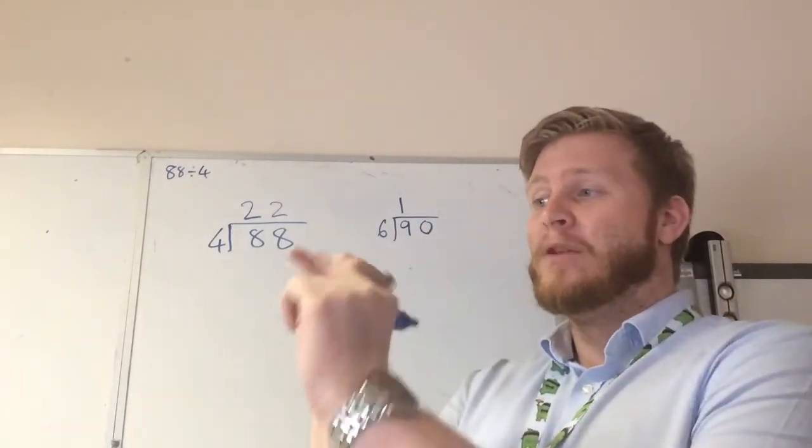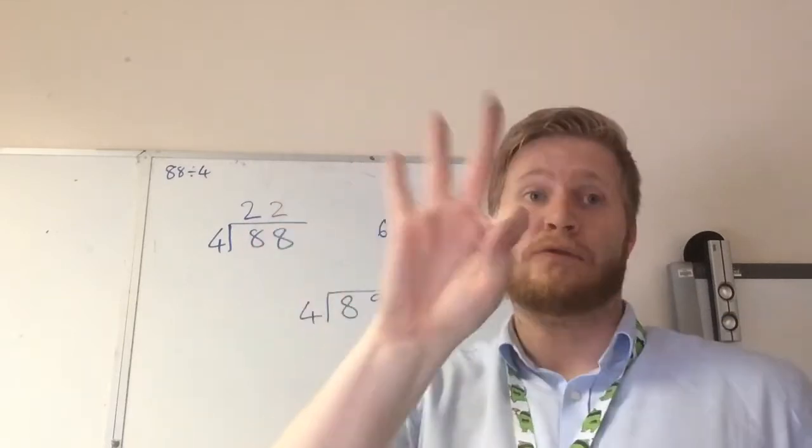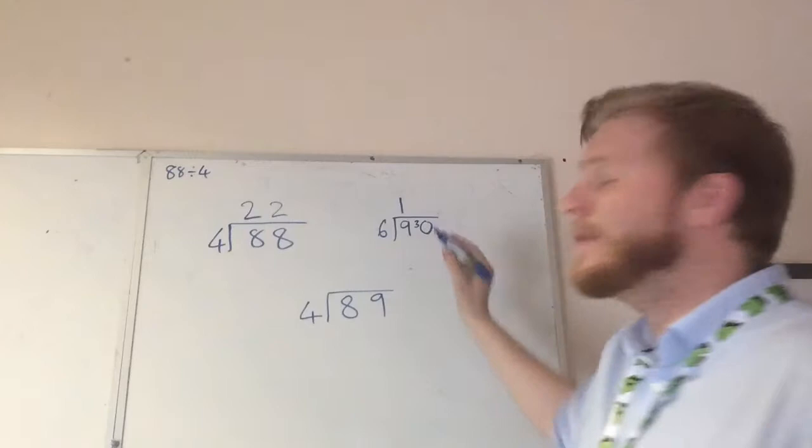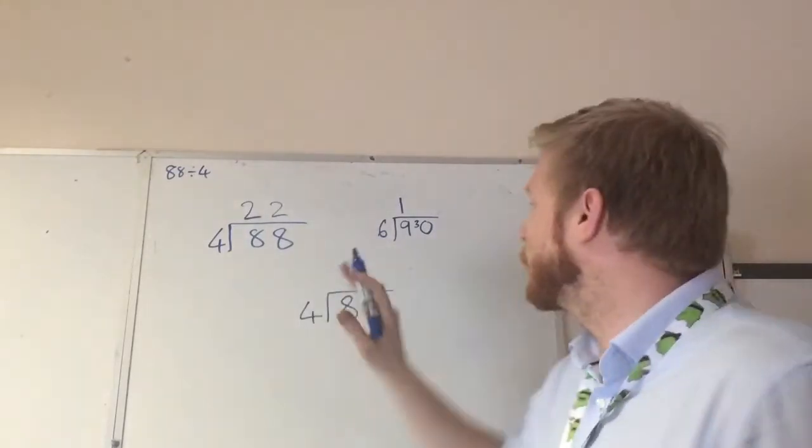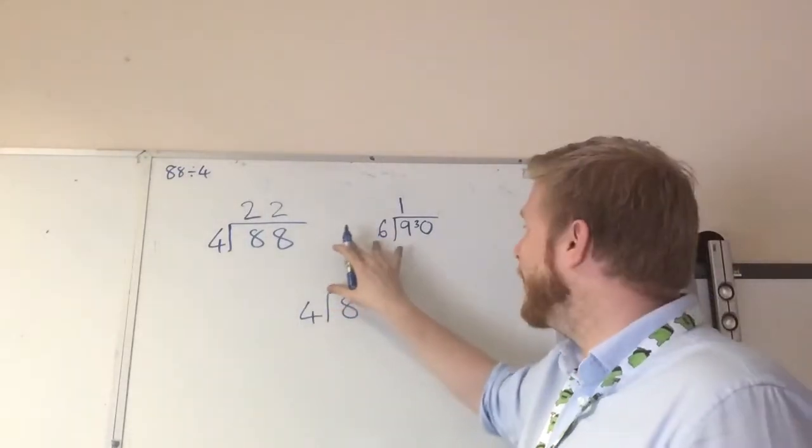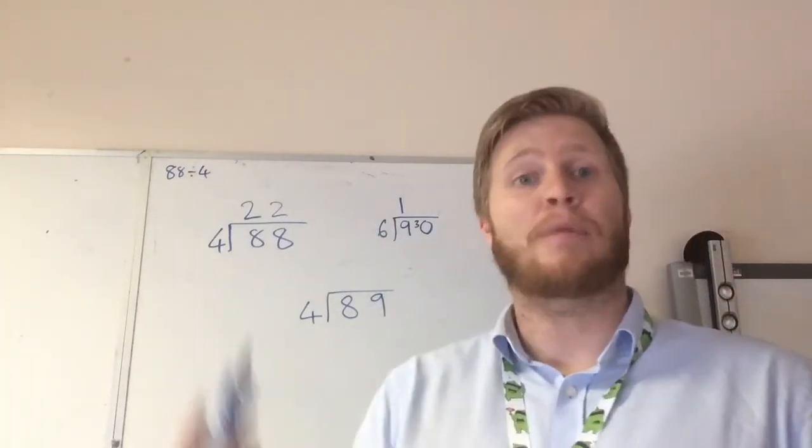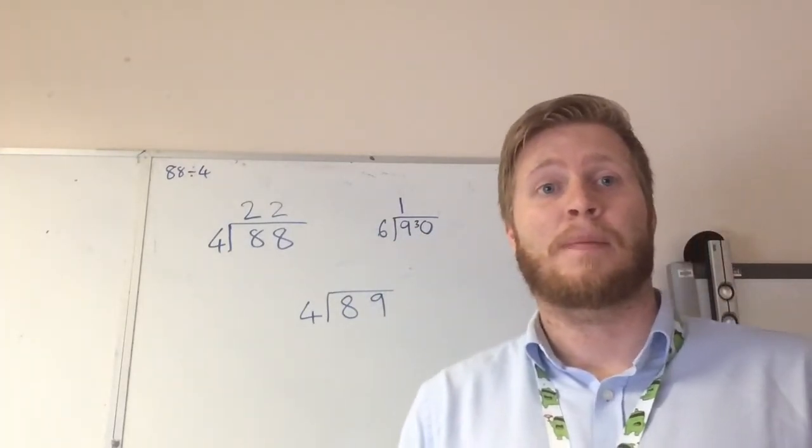So 6, 7, 8, 9. We have 3 left over. So we put our 3 left over there, and then we've got 30 here. So now what we need to see is how many 6s are in 30. And all we need to do that is to count through now the 6 times table.